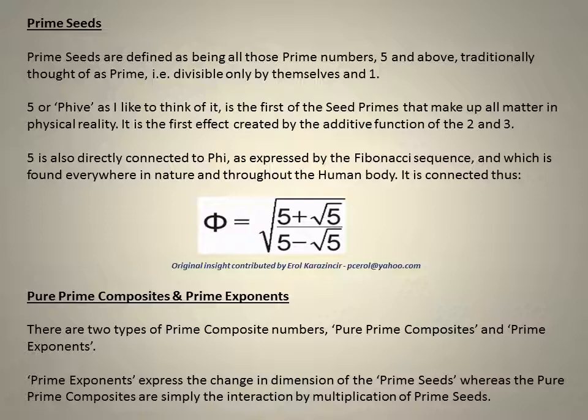There are two types of prime composite numbers, pure prime composites and prime exponents. Prime exponents express the change in dimension of the prime seeds, whereas the pure prime composites are simply the interaction by multiplication of prime seeds.